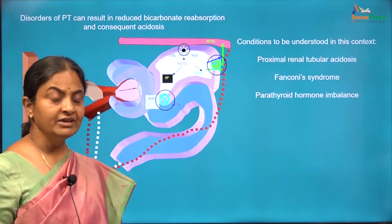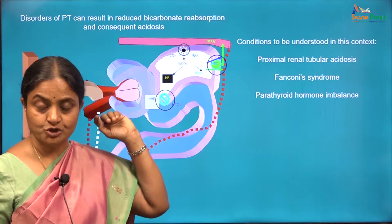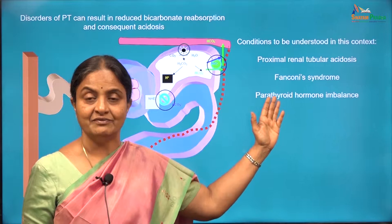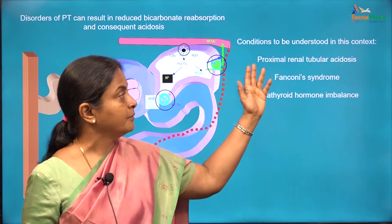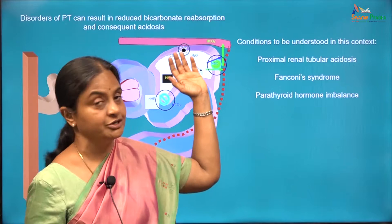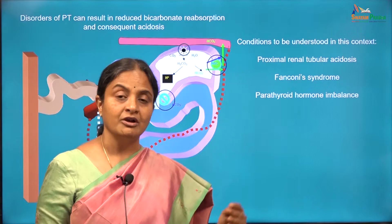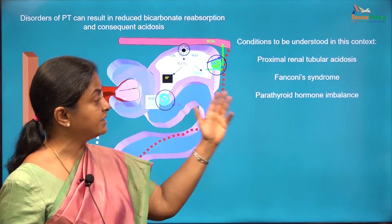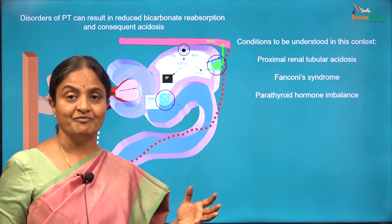Having learned about the mechanism of bicarbonate reabsorption in the proximal tubule, we will keep these terms in mind and refer to them when we discuss pathologies related to plasma pH — a condition called proximal renal tubular acidosis where the bicarbonate reabsorption process fails, a condition called Fanconi syndrome, and how parathyroid hormone imbalance affects the processes of bicarbonate reabsorption and generation.